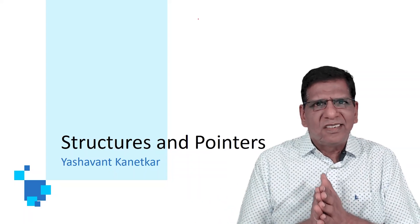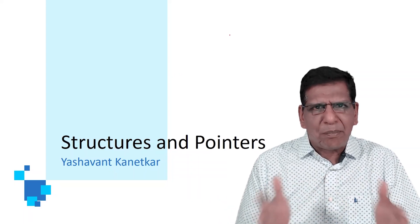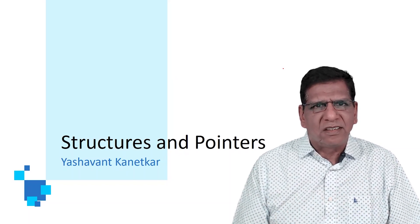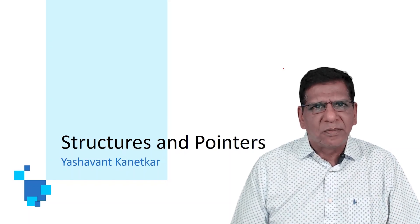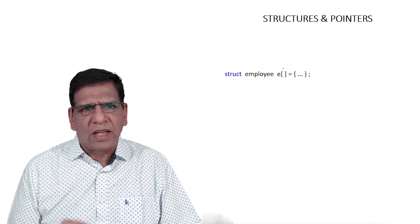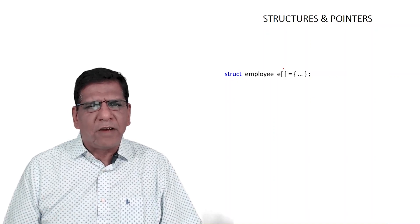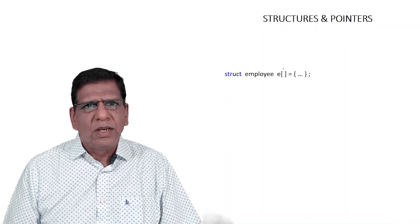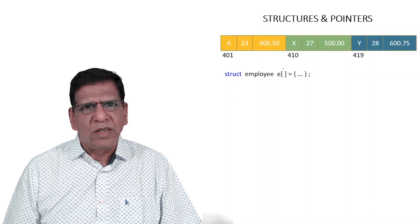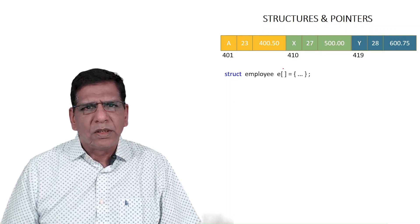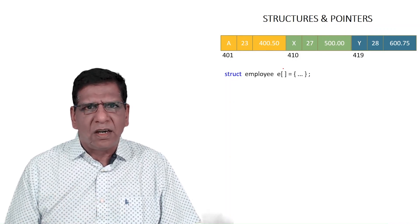Hello friends, I'm back today to explain the relationship between structures and pointers. I will create an array of structures of type struct employee, with that array containing values like a 23 400.5, x 27 500.0, and y 28 600.75. These being array elements, we certainly expect them to be in adjacent memory locations.